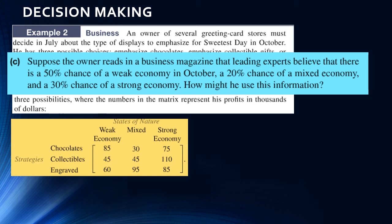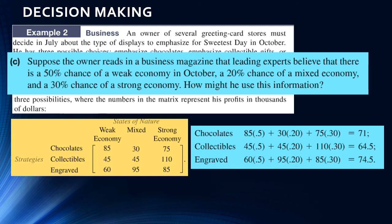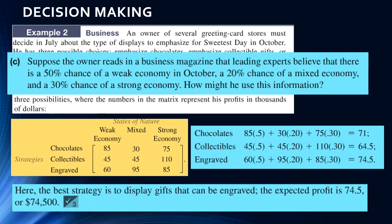Suppose the owner reads that leading experts believe there is a 50% chance of a weak economy in October, a 20% chance of a mixed economy, and a 30% chance of a strong economy. He calculates the expected value for each of the three strategies: 0.5 times the weak economy values, plus 0.2 times the mixed economy values, plus 0.3 times the strong economy values. Based on these expected values, the best strategy is to display gifts that can be engraved, with an expected profit of $74,500.